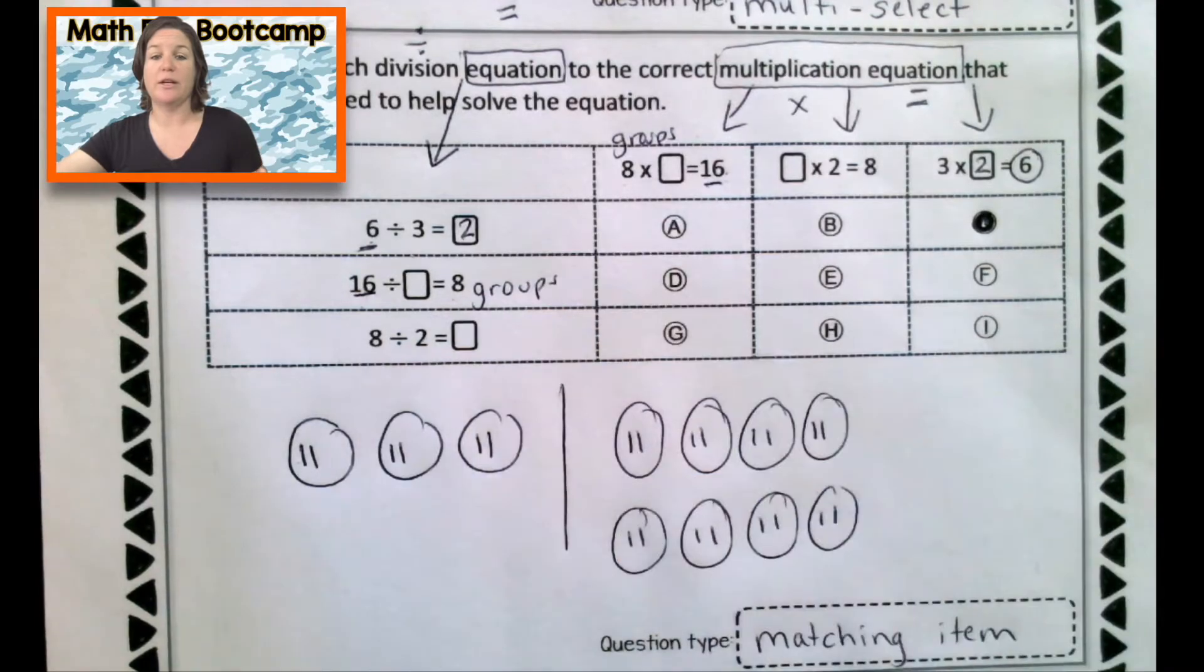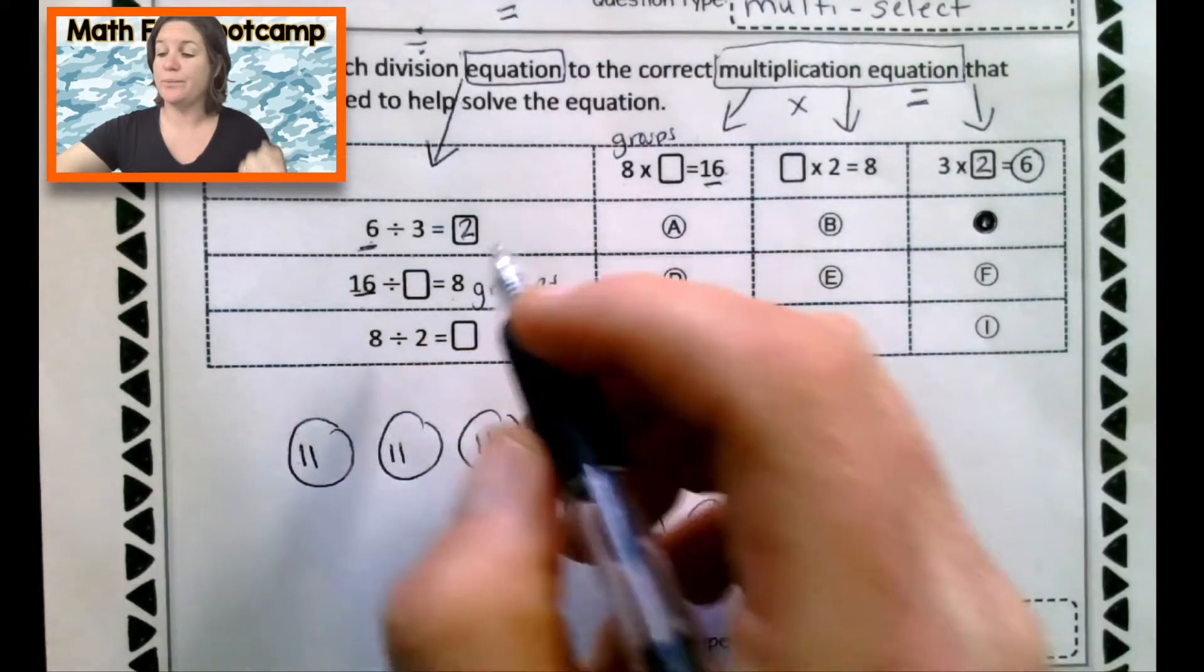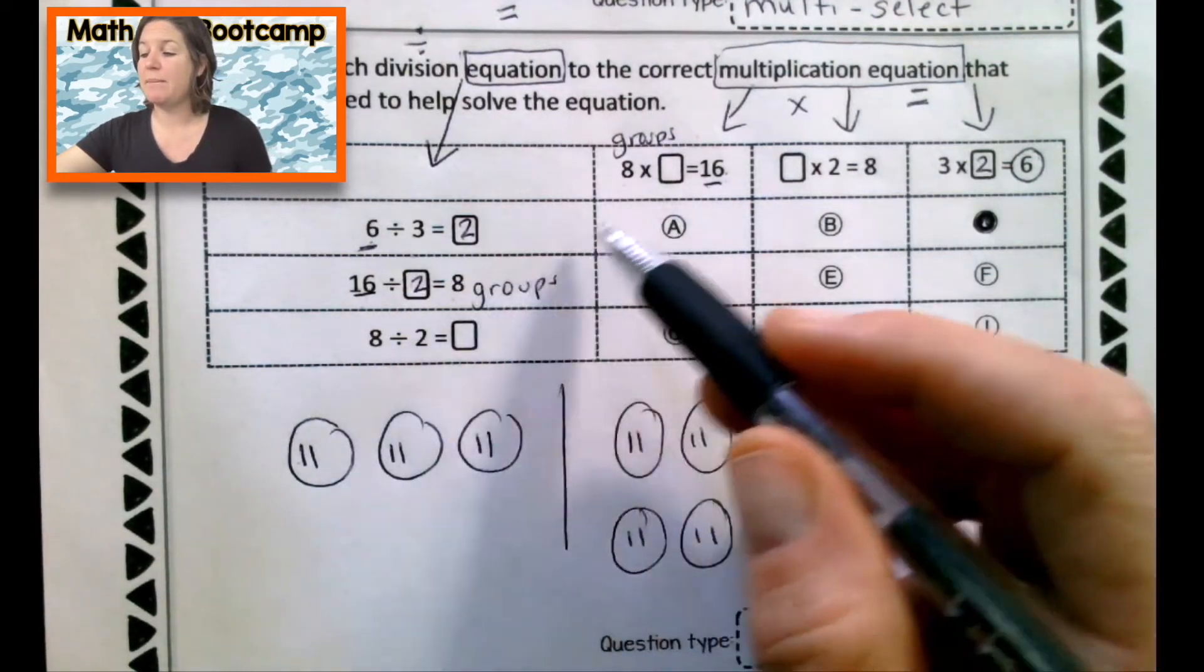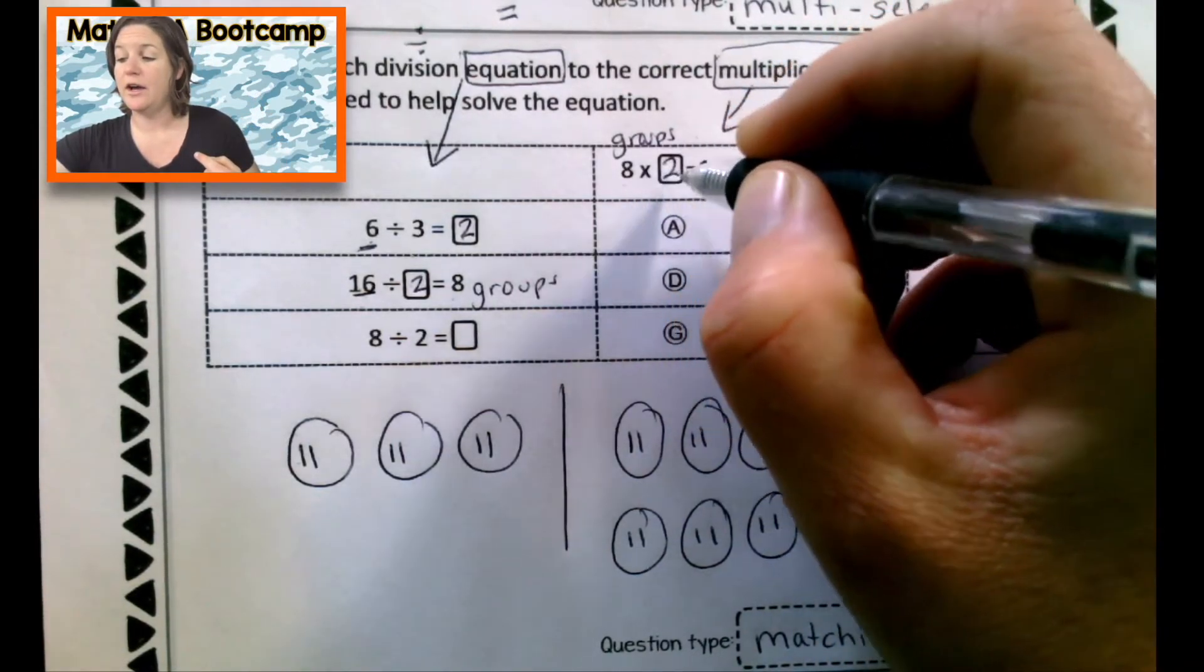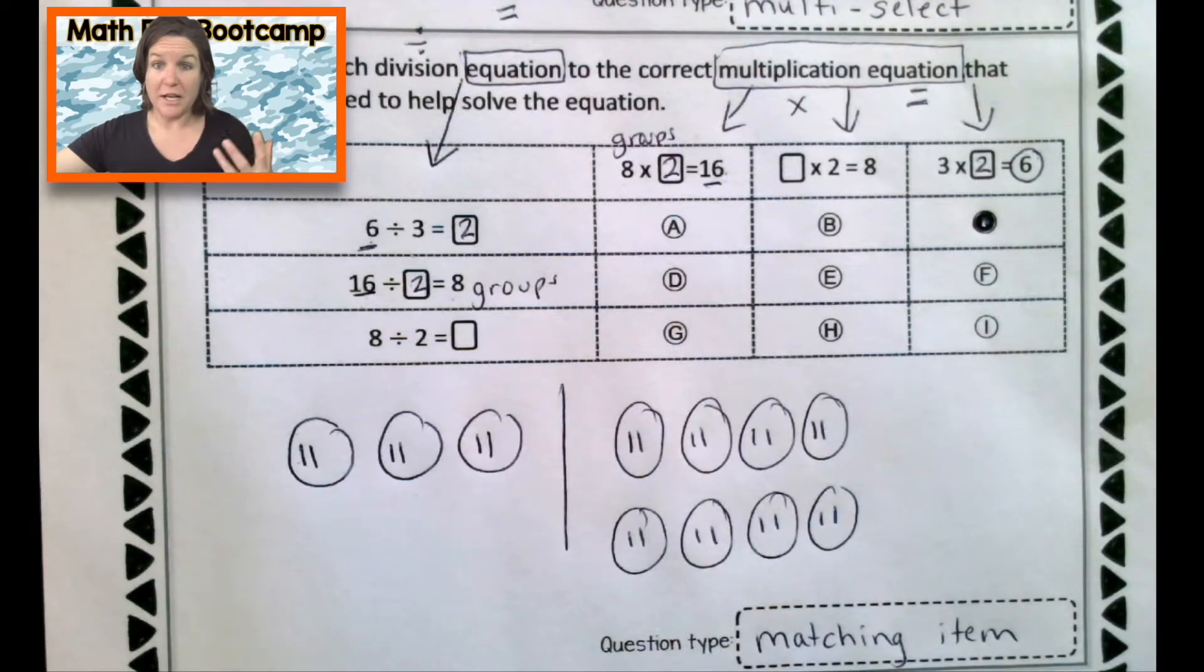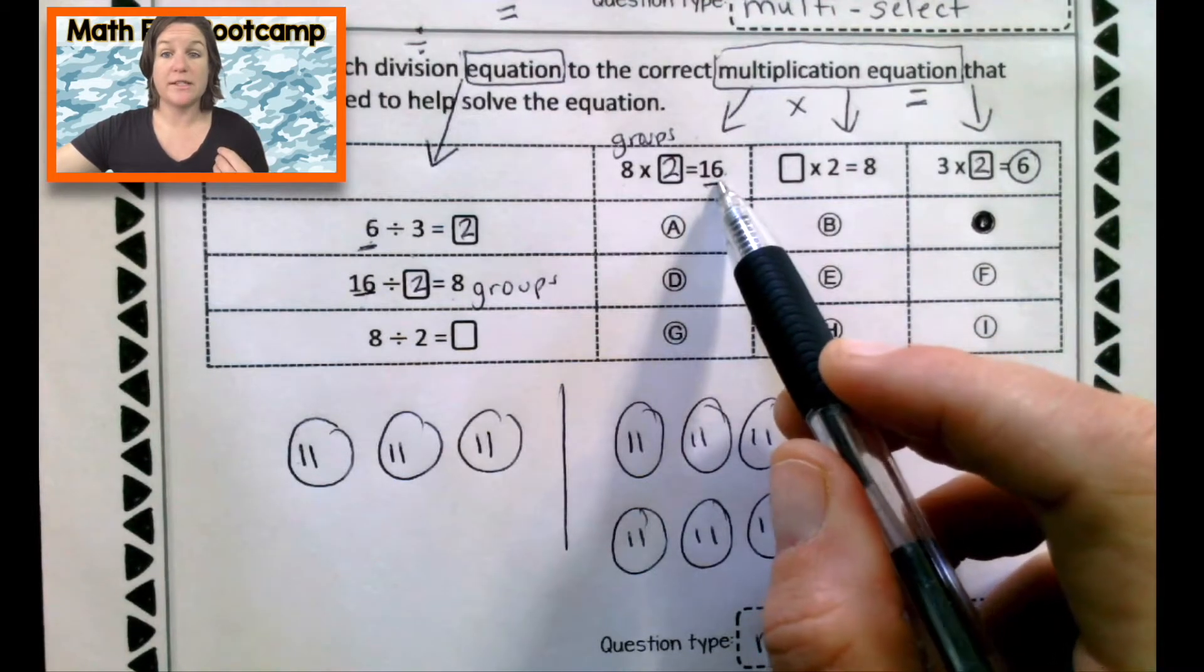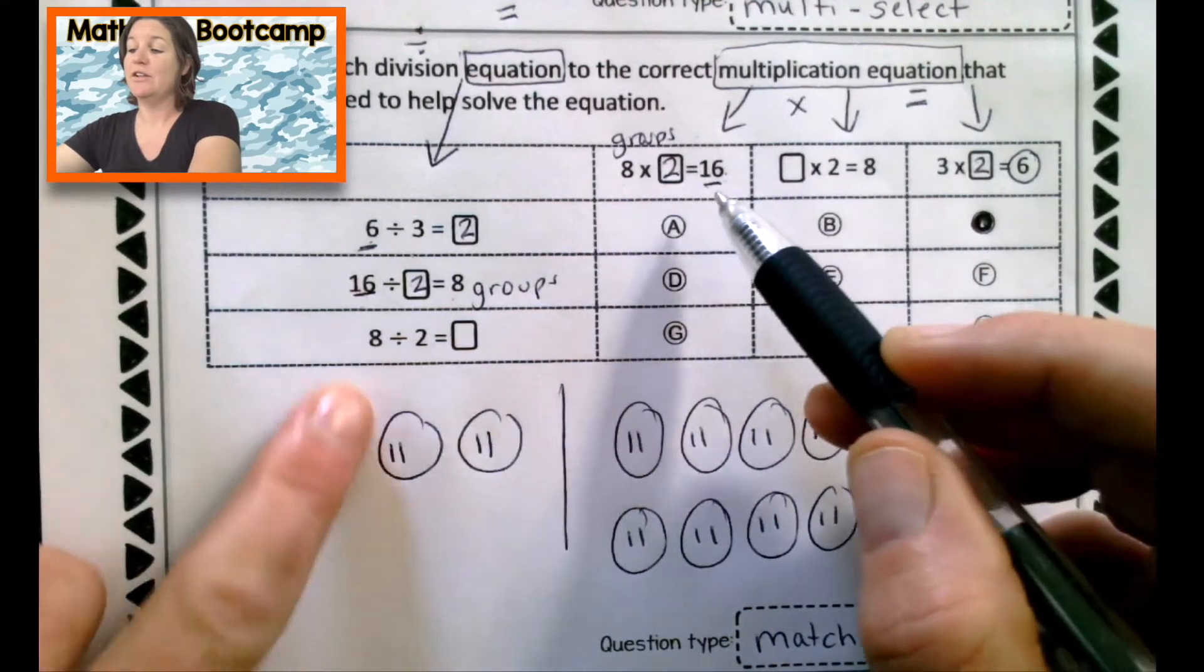So what would be the missing value here? Two. And let's see if that matches this equation. Do we have eight groups? Yes. Of two in each? Yes. Equals a total of 16? Yes. So let's match it up.